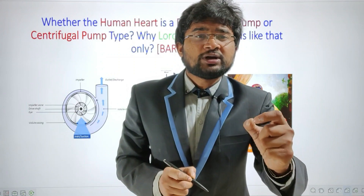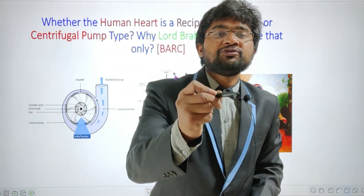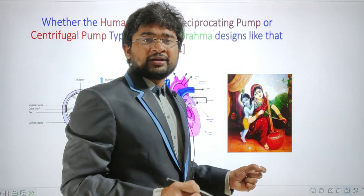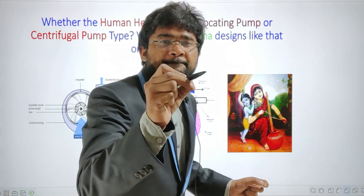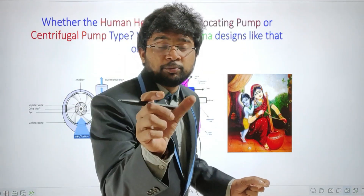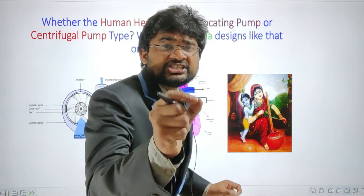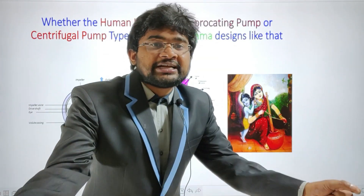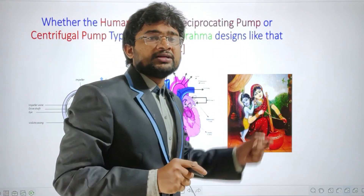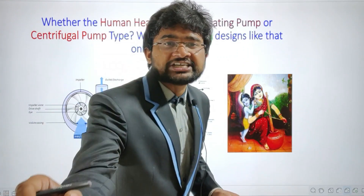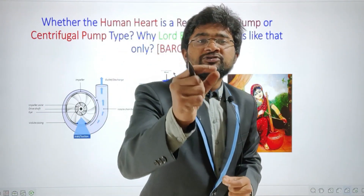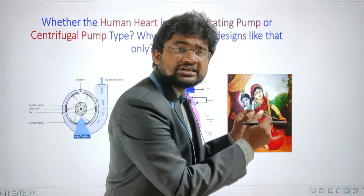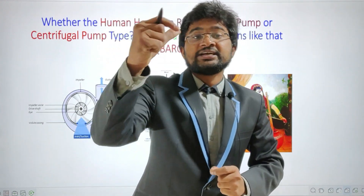Before answering this question, we should have full command on centrifuge action. Here, Eshoda is churning curd. We know that curd contains butter and buttermilk, and both are having different densities. During the churning process, what will happen? Two different density fluids get separated — that is, butter and buttermilk. This is called centrifuge action. Due to centrifuge action, two different density fluids get separated. We need to implement this centrifuge action knowledge in understanding the centrifugal pump.